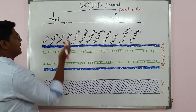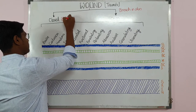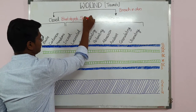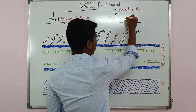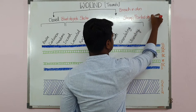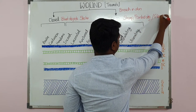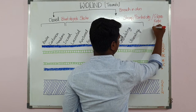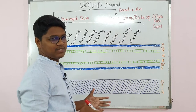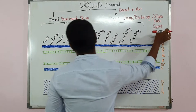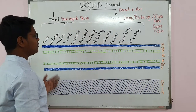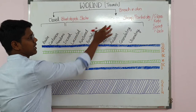Closed wounds are basically caused by blunt objects, for example sticks. Open wounds are basically caused by sharp or pointed objects — you can give examples like glass, knife, sword, or nails. So sharp or pointed objects cause open wounds. This is the difference between the closed and the open wound.